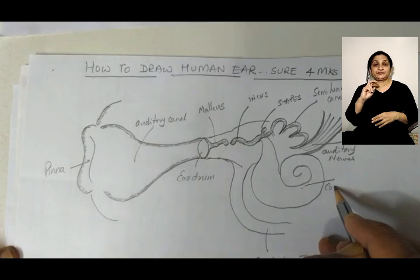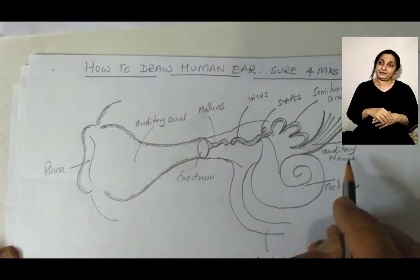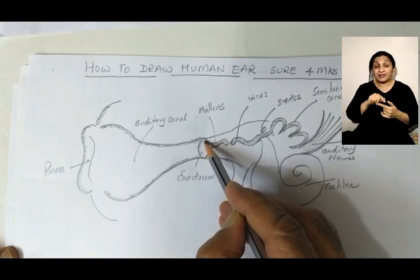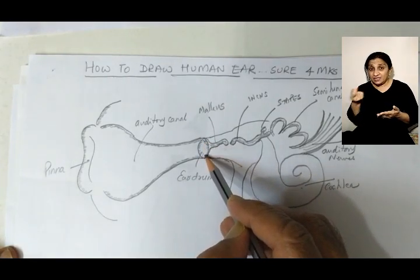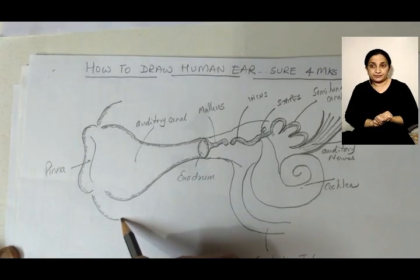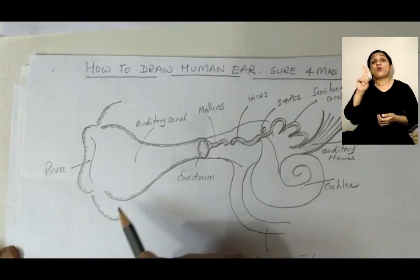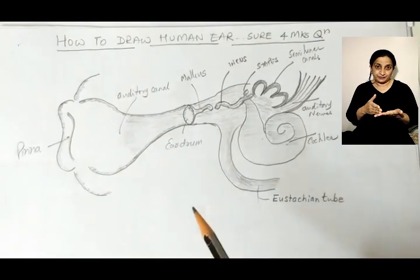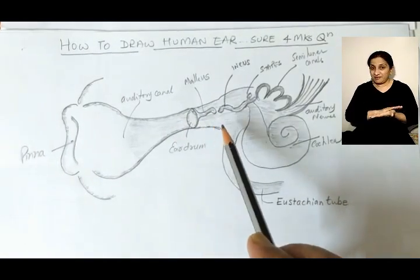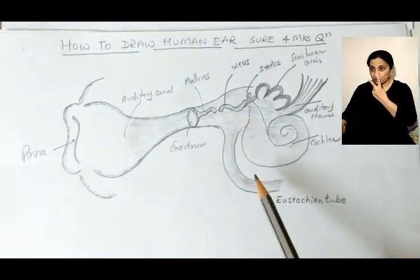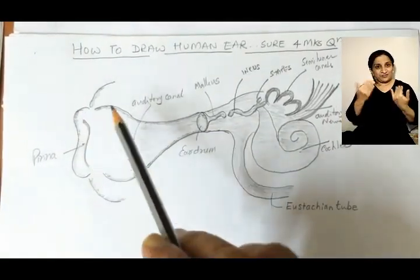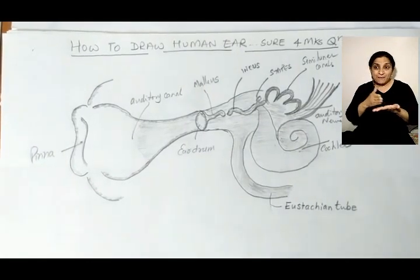Cochlea — note the spelling: C-O-C-H-L-E-A. You can practice this figure a couple of times so that you don't go wrong, and remember how to name the parts and all the functions of each part separately. The figure looks something like this — I shaded the auditory canal, the middle ear, cochlea, and the Eustachian tube. If you have time at the end you can do it, otherwise just draw the hair in this area. Have good practice.